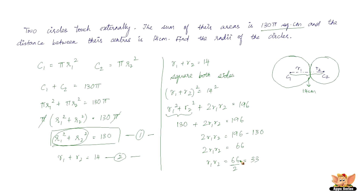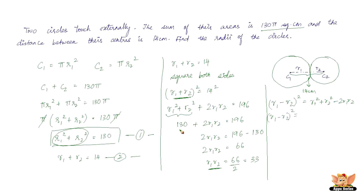Now we have r1r2 = 33 and r1 + r2 = 14, but we need another equation. Using (r1 - r2)² = r1² + r2² - 2r1r2 = 130 - 2(33) = 130 - 66 = 64. So r1 minus r2 the whole square is 64, meaning r1 minus r2 equals the square root of 64, which is 8.